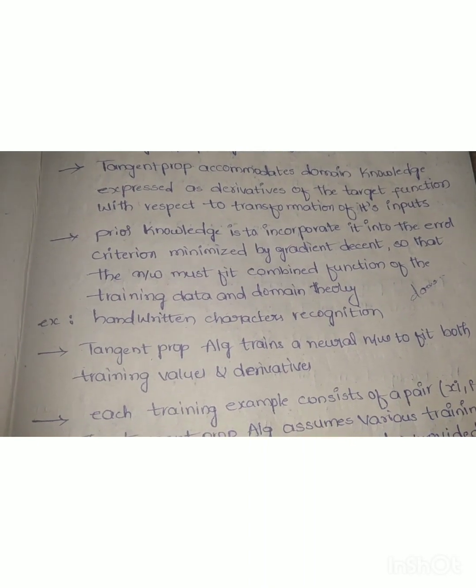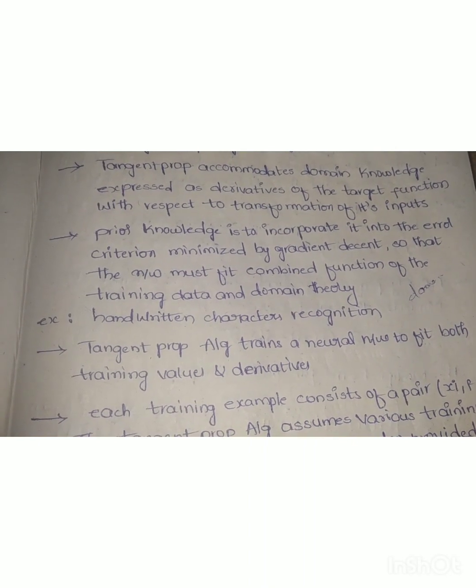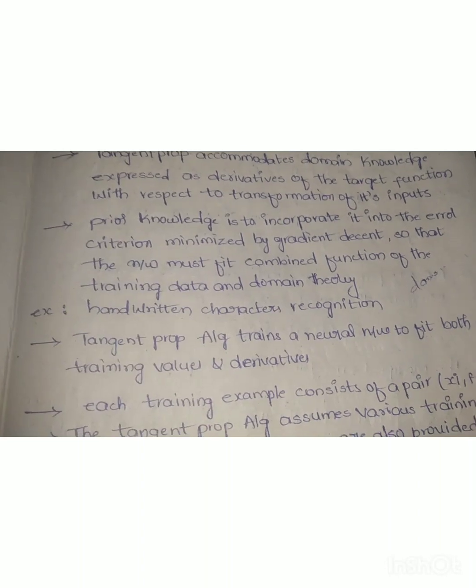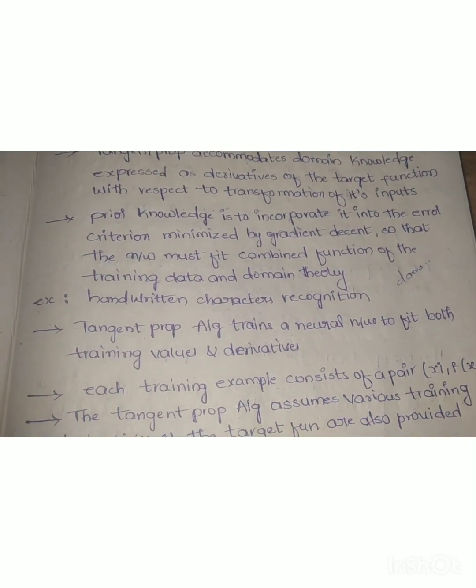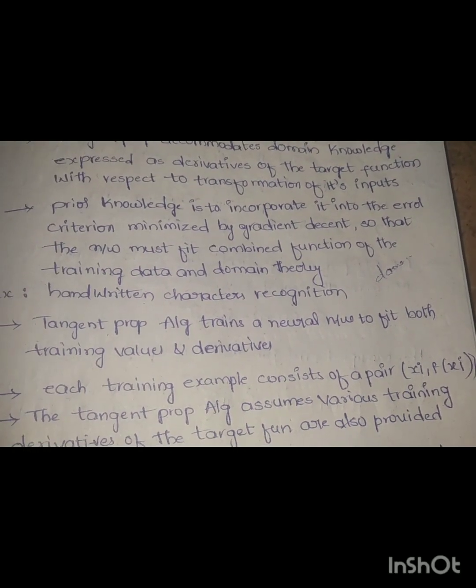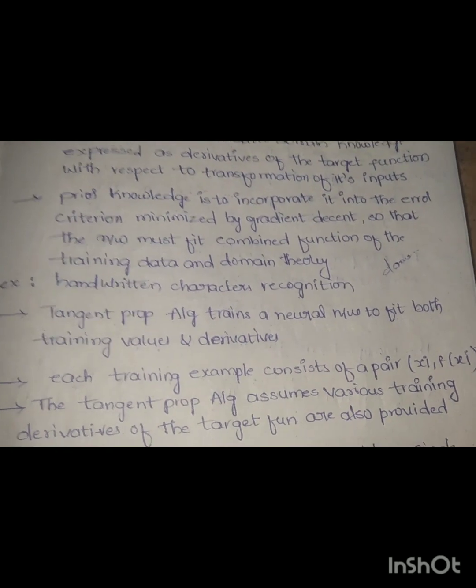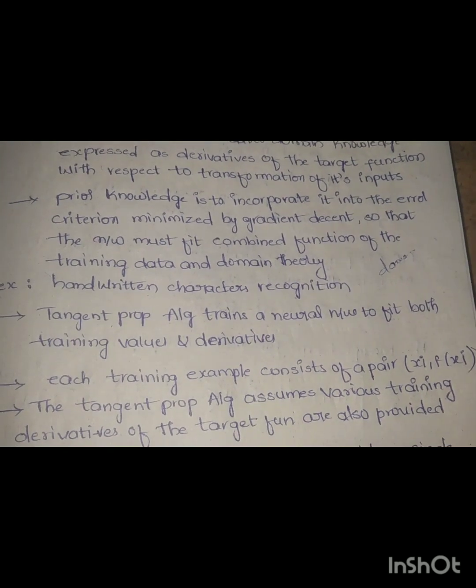For example, handwriting character recognition. Second, the tangent prop algorithm trains a neural network to fit both training values and training derivatives.